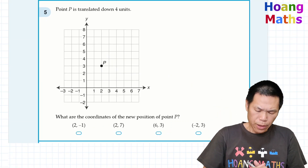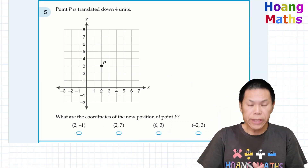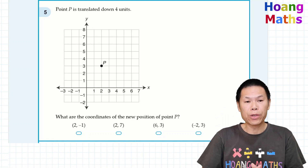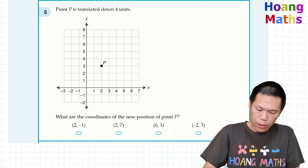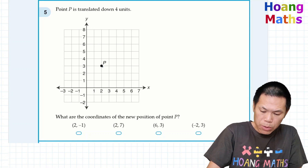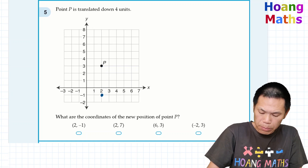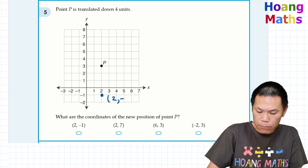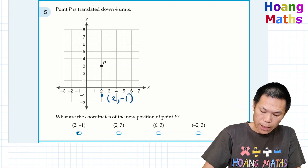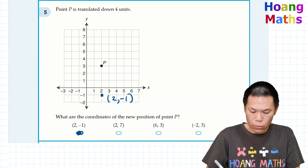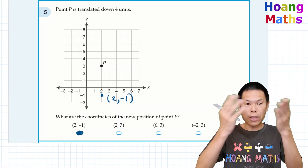Next one: point P is translated four units down. That means we go directly down four units. Starting at the original position, we move down one, two, three, four. So the new position of P is (2, negative 1). Therefore, the answer is A: (2, negative 1).